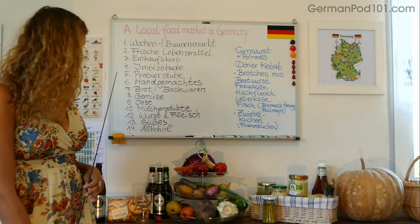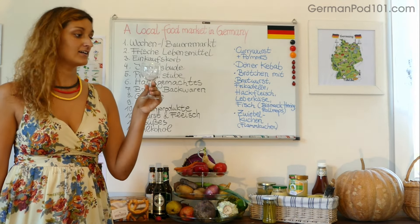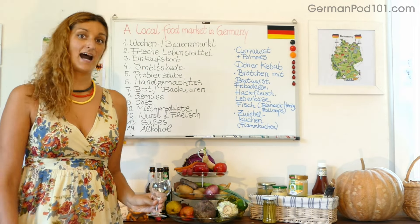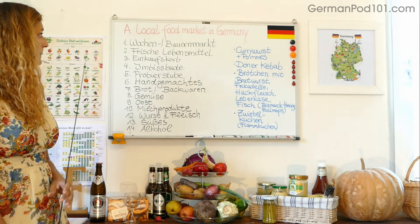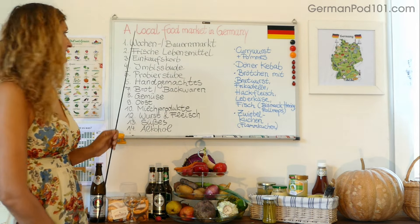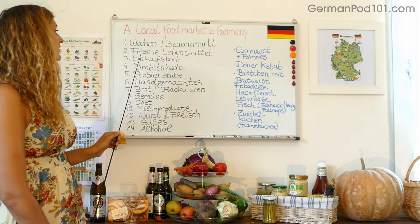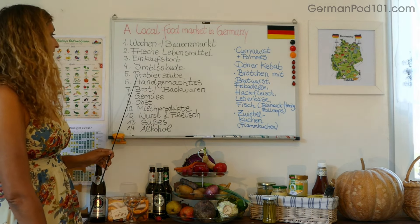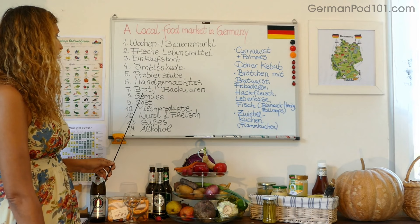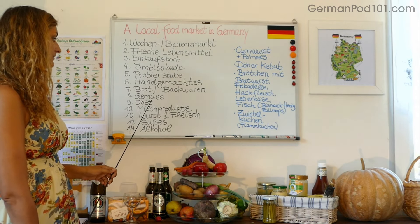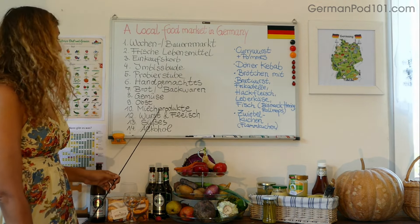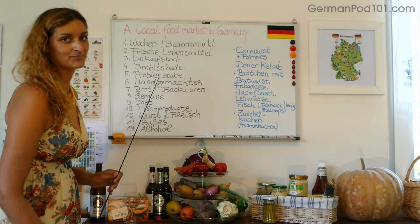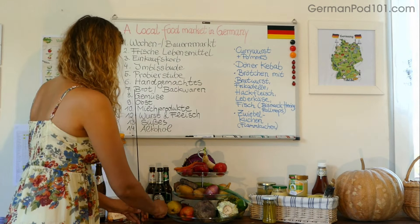Ich mache jetzt keine Werbung. Was man in Deutschland auch oft trinkt ist Weißwein — das hier ist ein Weißweinglas. Zum Beispiel in Frankfurt gibt es den Apfelwein. Ich wiederhole nochmal ganz kurz die Vokabeln: Wochen- und Bauernmarkt, frische Lebensmittel, Einkaufskorb, Imbissbude, Probierstube, Handgemachtes, Brot und Backwaren, Gemüse, Obst, Milchprodukte, Wurst und Fleisch, Süßes und Alkohol. Dazu gibt es dann natürlich viele verschiedene Beispiele.